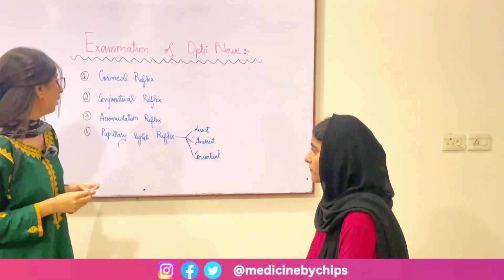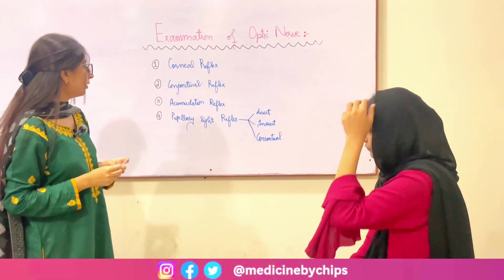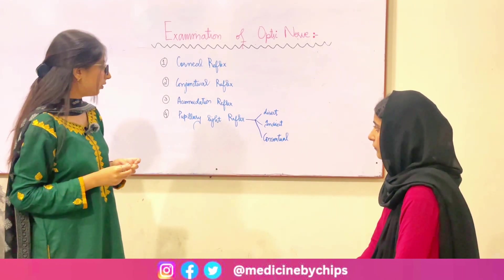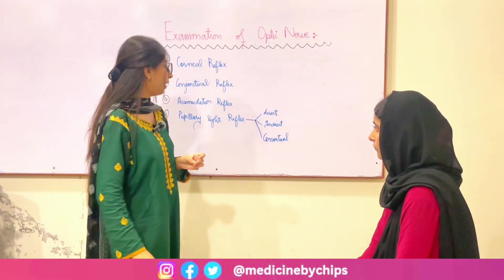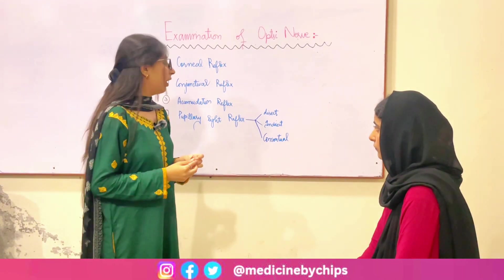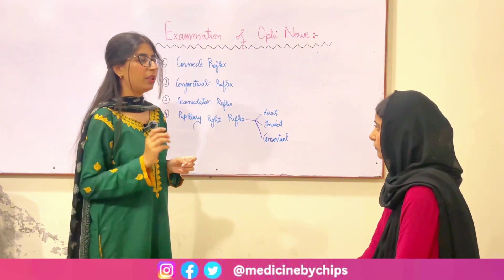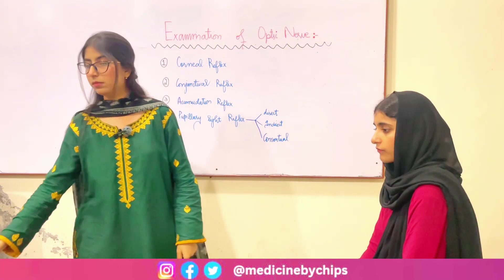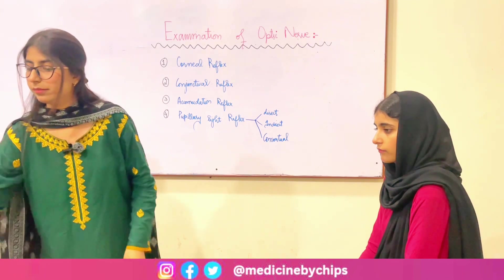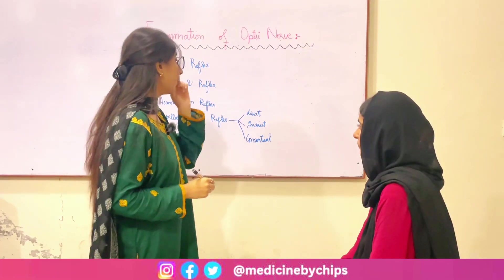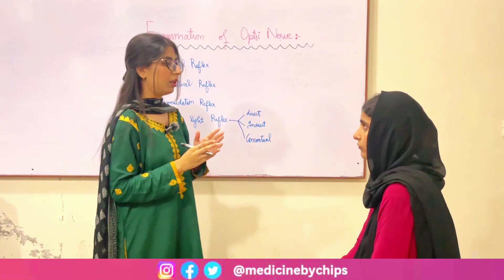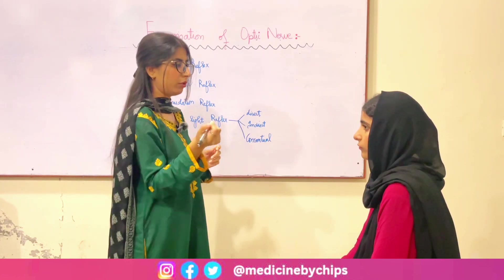Now moving to the last reflex, which is the pupillary light reflex. For this we need a torch and we are going to place the light into the patient's eye and look for the constriction of the pupil. For the direct light reflex we have to ask the patient that we are going to bring the light into their eyes from the periphery to the center and look for the response.